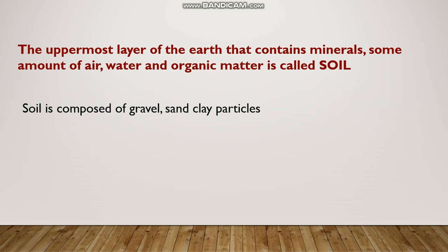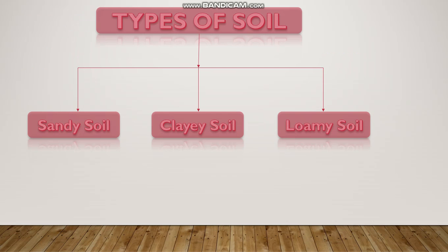The uppermost layer of the earth that contains minerals, some amount of air, water and organic matter is called soil. Soil is composed of gravel, sand and clay particles. There are three types of soil: sandy soil, clay soil and loamy soil.